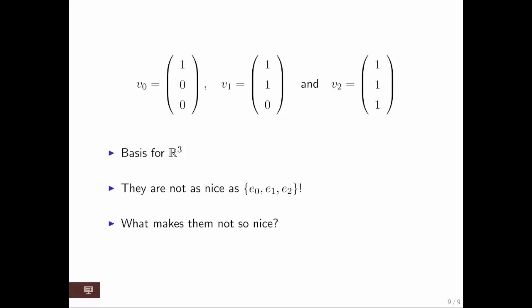Well, for one thing, two of them are not of length 1. And they're also not orthogonal to each other. If you, for example, take the inner product of v1 and v2, let's see, you get 2. That's certainly not 0.